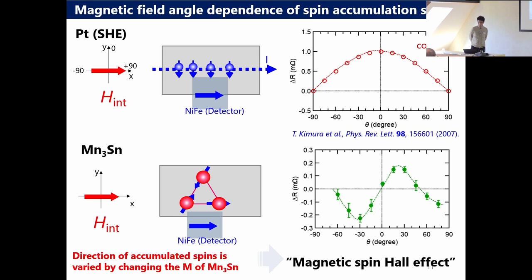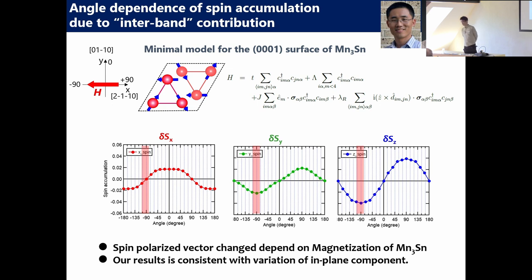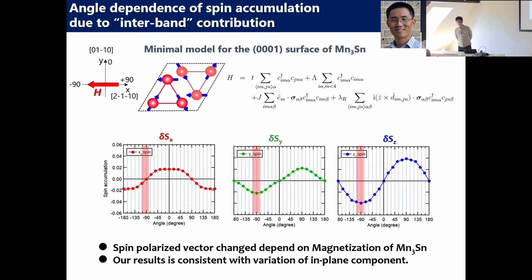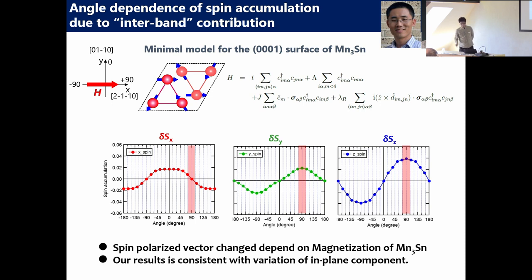At zero magnetic field — zero degrees is a parallel or anti-parallel configuration between the accumulated spin and the magnetization of the ferromagnet — this is very typical angular dependence of the spin Hall effect. However, in the case of Mn3Sn, we measured the angular dependence and this result is completely different compared to the spin Hall effect. Especially the sign here and here is opposite. And this variation is systematically changing by changing the magnetization direction of Mn3Sn. So from this experiment, we found this is a very new type of spin Hall effect.